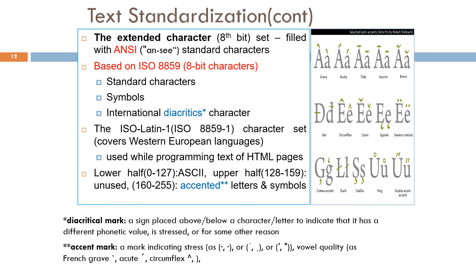ANSI used for extended character, the 8-bit character sets. These character sets contain the unchanged ASCII character set, lower half values 0 to 127, upper half 128 to 159 unused, and 160 to 255 for accented letters and symbols.